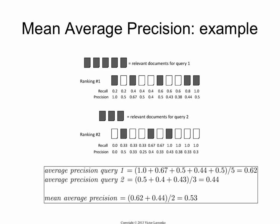Here's an example for how you compute the average precision. We have two rankings. This ranking has five relevant documents, and these are the recall and precision values at each rank, calculated the same way as before. For query 1, the average precision is computed by looking at the ranks where you have relevant documents and averaging the precisions there. You had a relevant document at rank 1 with precision 1, at rank 3 with precision 2/3, at rank 4 or 6 with precision 0.5, and then at the last two ranks with precision 0.44 and 0.5. You add all of them up and divide by the number of relevant documents — 5 in this case. So the average precision for query 1 is 0.62.